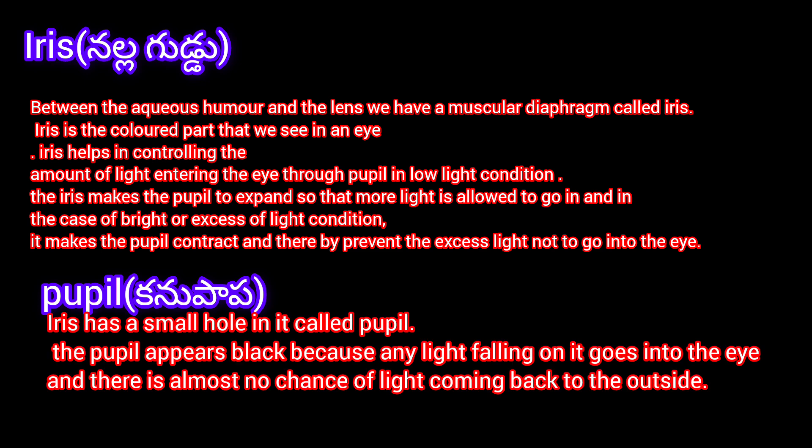Pupil (Kanupapa): The iris has a small hole in it called the pupil. The pupil appears black because any light falling on it goes into the eye, and there is almost no chance of light coming back to the outside.